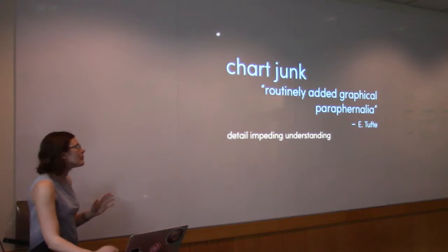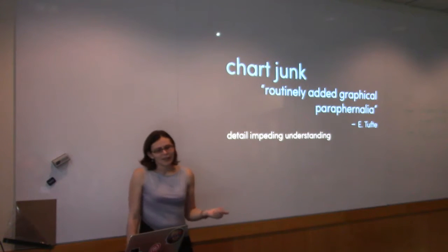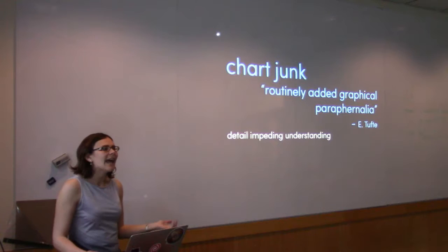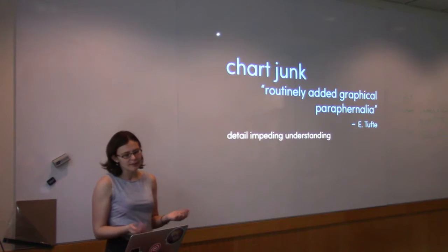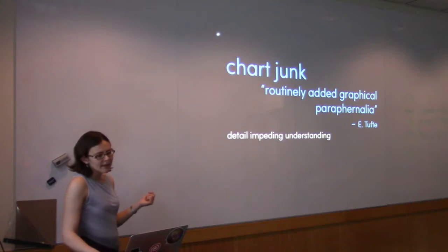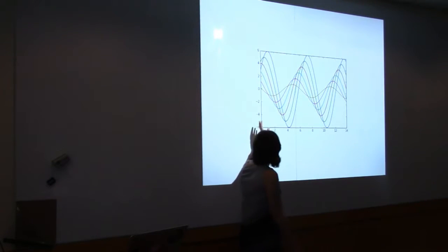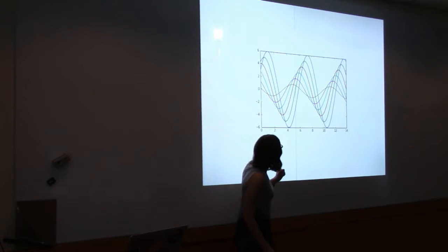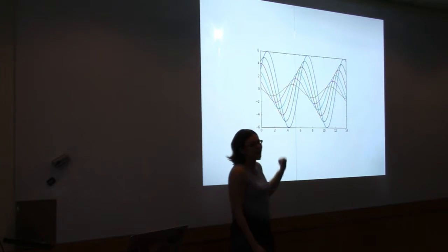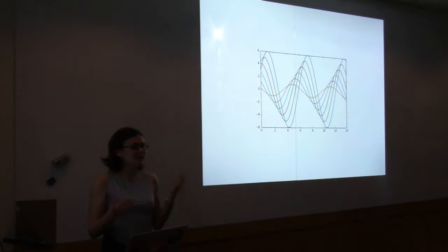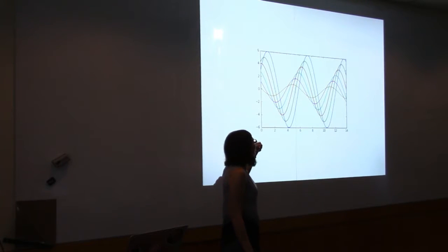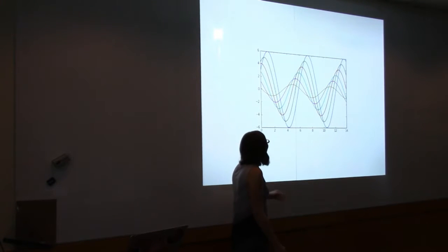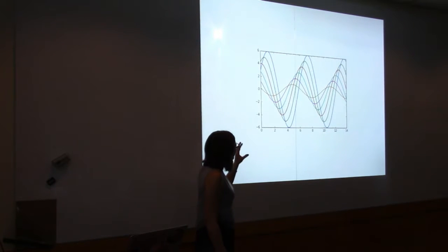I'm going to change direction and spend a few minutes on what's known as chart junk. Tufte coined this as 'routinely added graphical paraphernalia' — this is what I want to get into with defaults in your Python plotting packages. It's detail that impedes understanding. You can have a perfectly nice plot of some sine curves with some colours assigned. I wouldn't choose red and green because about 10% of your audience can't perceive the difference between those two lines, and that's something nice and easy to fix — just pick a different colour map.